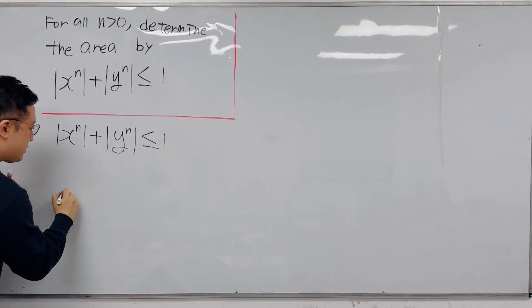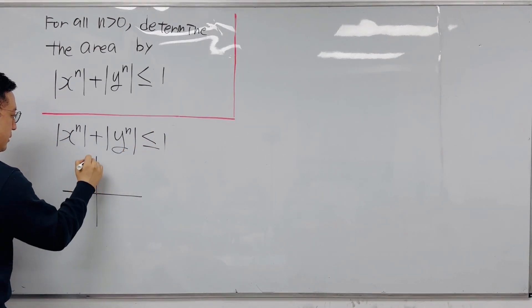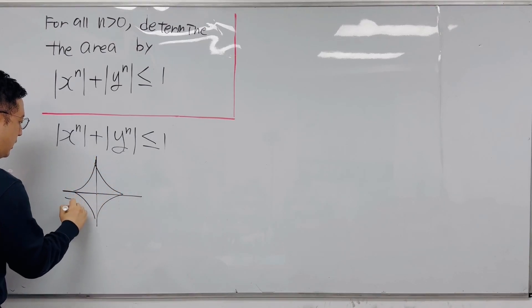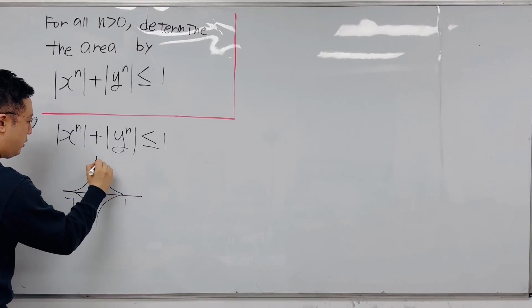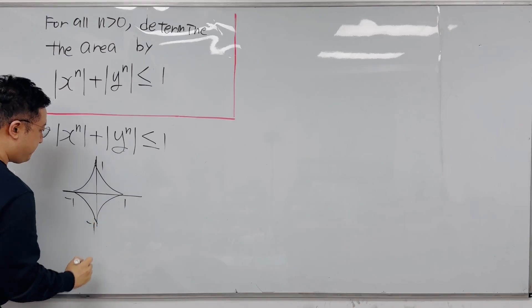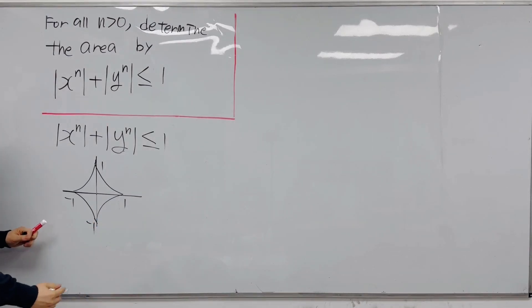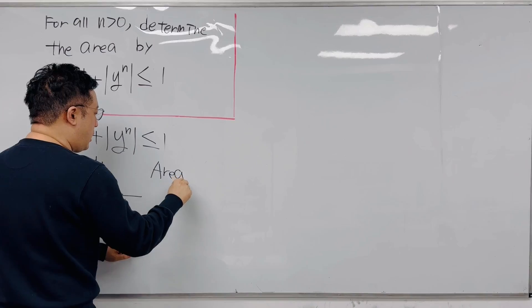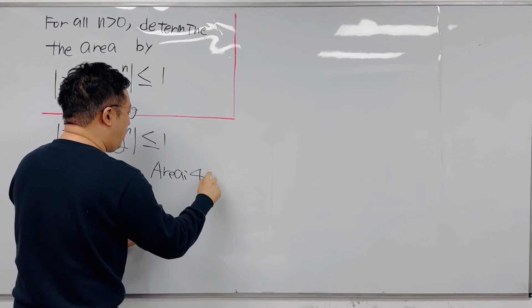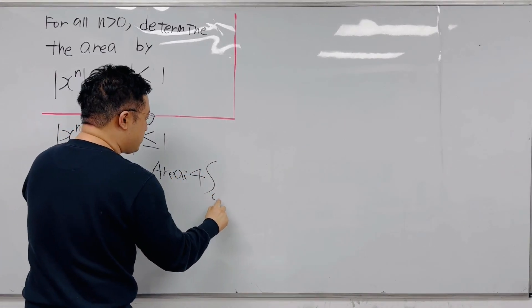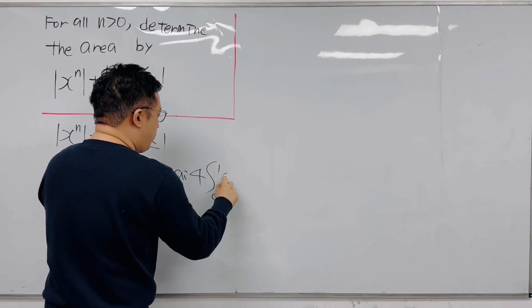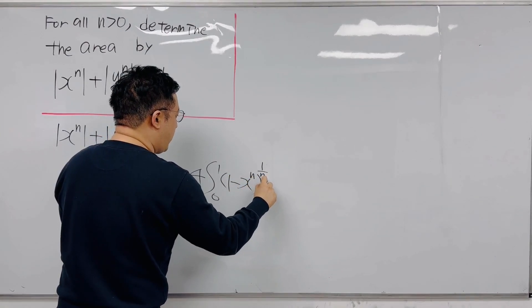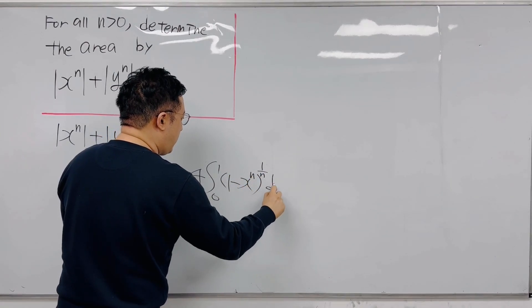This basically looks roughly like this — with bounds at negative 1, 1, 1, negative 1. So that's why we can get the area. The area has to be equal to 4 times the integral from 0 to 1 of (1 - x^n)^(1/n) dx.